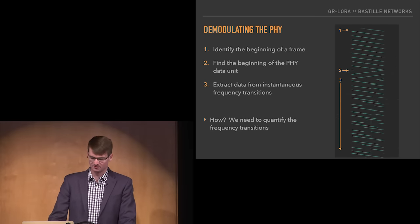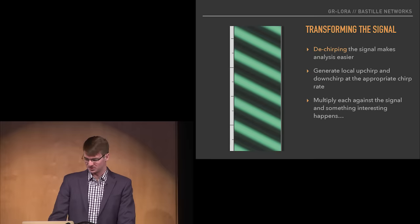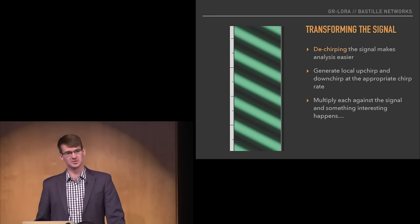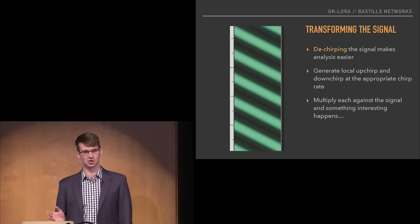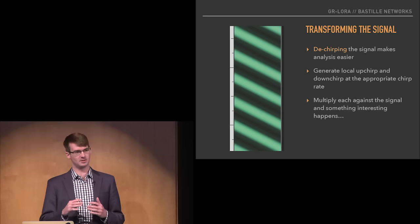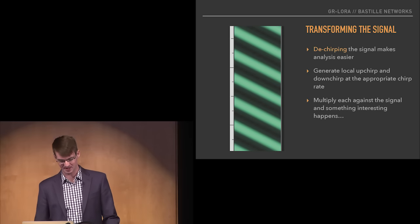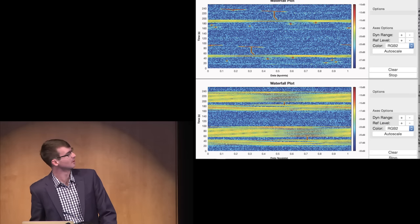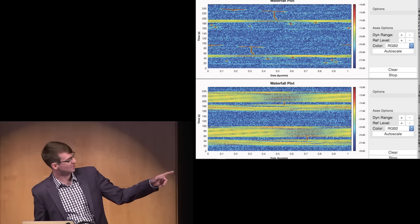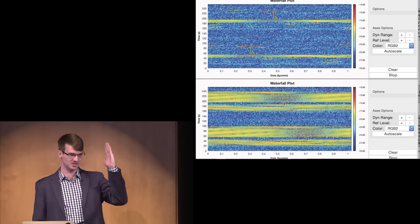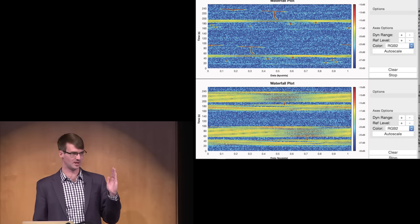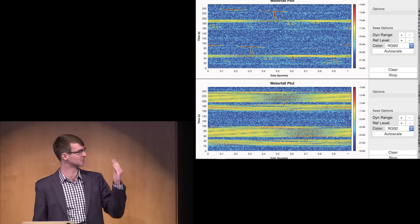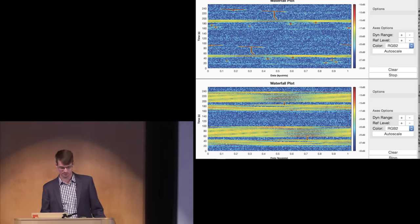To quantify those frequency transitions, we transform the signal by dechirping it. We generate a local upchirp and downchirp at the appropriate rate and multiply them against the signal — something interesting happens. This is the initial result from our GNU Radio prototype. You can see those choppy signals are turned into nice linear features aligned in time that we can start to work with.